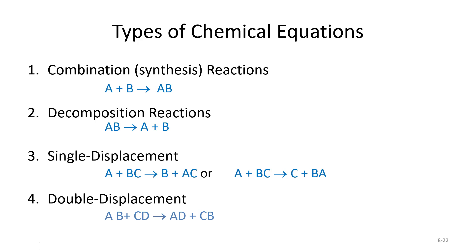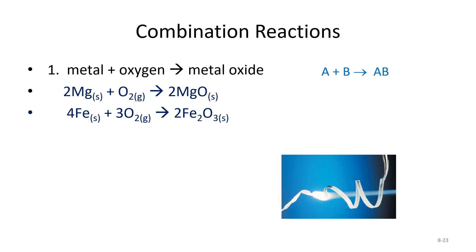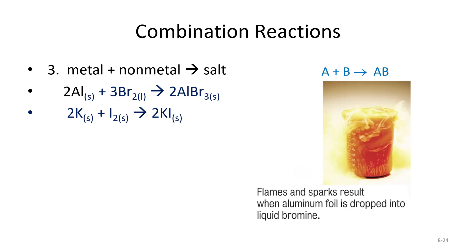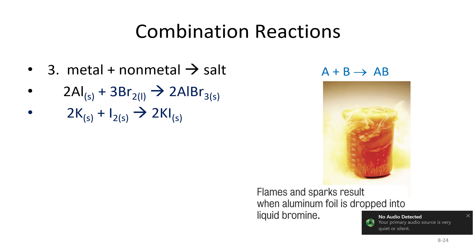For combination reactions, here are some examples. Metal plus oxygen gives us a metal oxide. Magnesium plus oxygen gives us magnesium oxide. Iron plus oxygen gives us iron(III) oxide. We could also have a nonmetal plus oxygen: carbon plus oxygen gives us carbon dioxide, and nitrogen plus oxygen gives us dinitrogen monoxide.